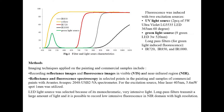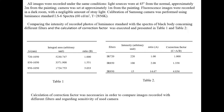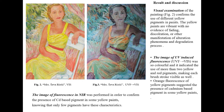Fluorescence was induced with two excitation sources: a UV light source and a green light source. Long-pass filters for green light induced fluorescence — IR720, IR850, and IR1000 — were used. Before we present the results and discussion, note the correction factor that needs to be applied in order to objectively compare photos. Comparing the intensity of recorded photos of luminance standard with the spectra of a black body concerning different filters, the correction factor was calculated and presented in Table 1 and Table 2.